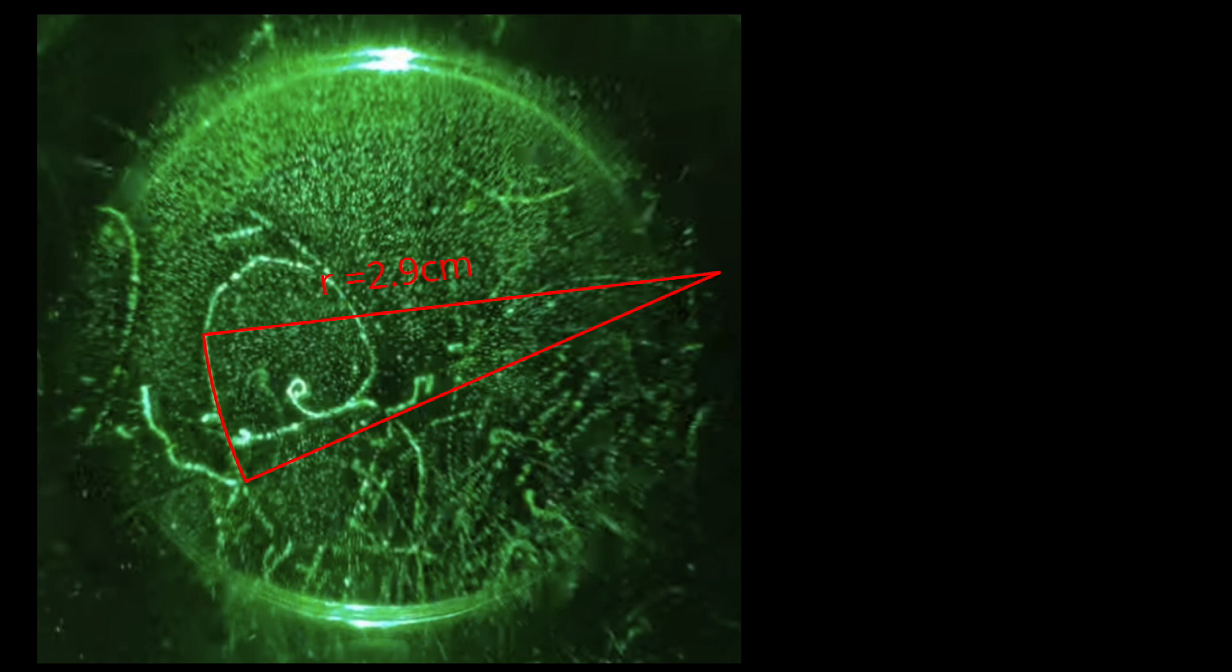We can prove that these trails from the sodium-22 are positrons, and not some other positively charged particle, by looking at the radius of curvature. This one, for example, starts with a radius of 2.9 centimeters, corresponding to a positron energy of around 424 kilo electron volts.